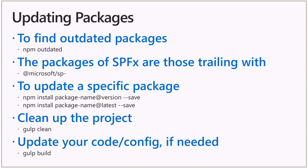From a SharePoint framework perspective, you have to look for the @microsoft/sp- prefix, because all of those packages are included in the SharePoint framework development, and you will need to update all of those packages. To update them — pretty easy, pretty straightforward — you simply need to use npm install, providing the package name at the version that you want to install in your solution, with --save to save it locally. Moreover, if you want to install the latest version, you can say package-name@latest to get the latest and greatest version.